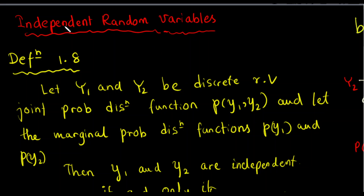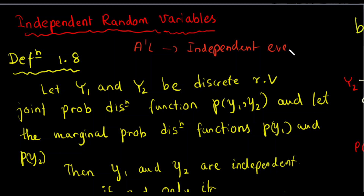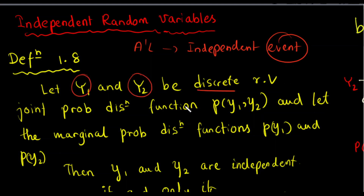We will use independent random variables. We will use a level as well. We will use independent events. We will use discrete random variables y1 and y2. We will use the joint probability distribution p(y1, y2).